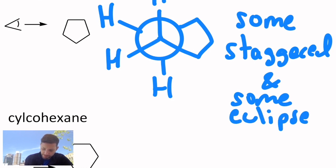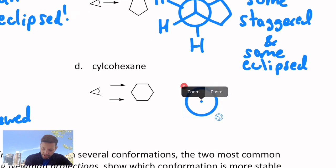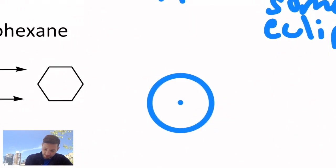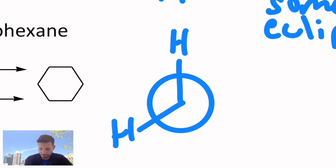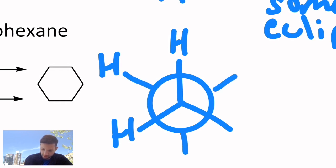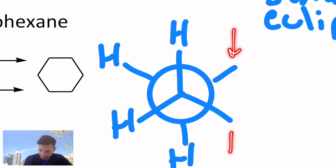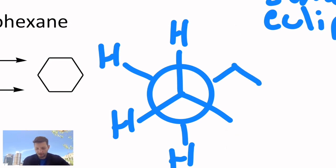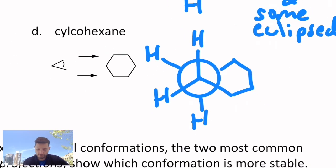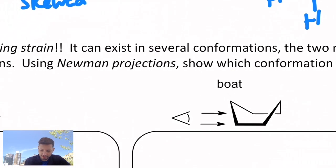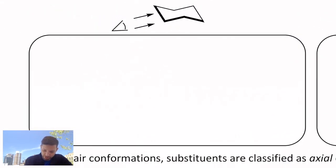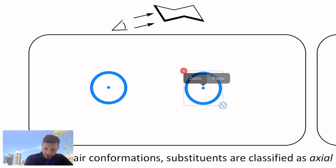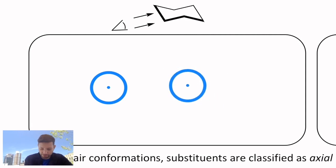But once we get to a six-membered ring, that became our best-case scenario — you could get everything to be in a staggered conformation. Here's one way I could show that: three atoms off of the front, three atoms off the back, staggered — H, H, and then these are two carbons connected to the rest of the ring. You could actually draw a double Newman projection side-by-side, which chemists sometimes use to show two Newmans for the price of one.